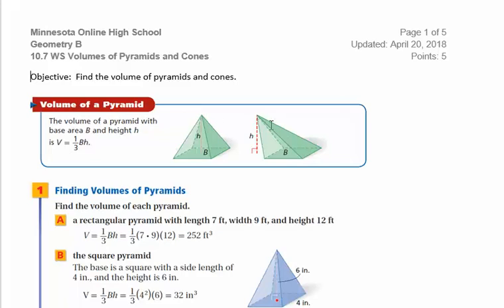If it is an oblique pyramid, the volume is the same, but the height is measured at a right angle to the base.